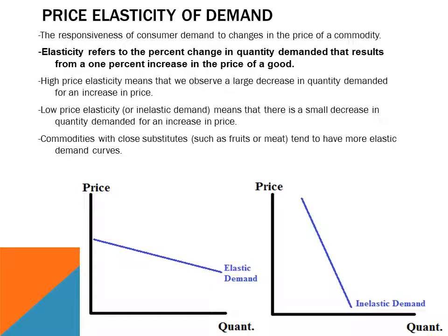One important characteristic of demand curves is called the price elasticity of demand, and it measures the responsiveness of consumer demand to changes in the price of a commodity. Elasticity refers to the percent change in the quantity demanded that results from a 1% increase in the price of a good. A high price elasticity means we will observe a large decrease in quantity demanded for a given increase in price. Conversely, low price elasticity, also known as inelastic demand, means there is a small decrease in quantity demanded for an increase in price. Commodities with close substitutes, such as fruits, vegetables, or different types of meat, tend to have more elastic demand curves.